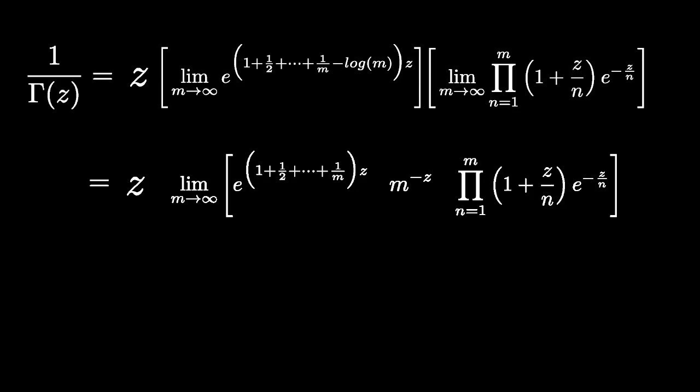Again, using standard rules for exponentials, we can rewrite the first term as the product from n equals 1 to m of e to the z over m, and then cancel like terms.